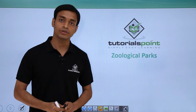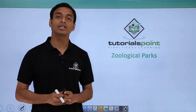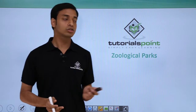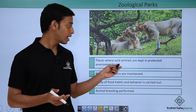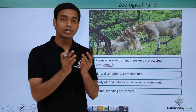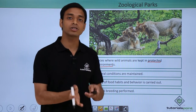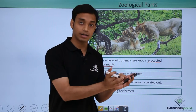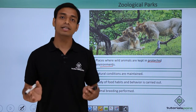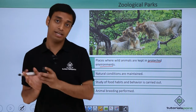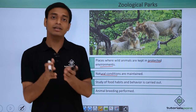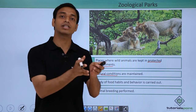Welcome to Tutorials Point. In this video we are going to talk about a taxonomical aid which is zoological parks. Zoological parks are places or areas where wild animals are kept in protected environmental conditions. We try to create artificial conditions which are very similar to the natural habitat of those animals, with different areas created for different types of animals.